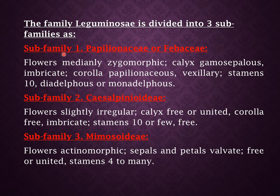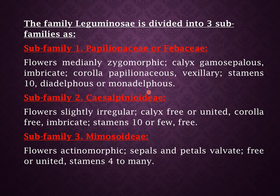Some identifying features of this family are: flowers are medianly zygomorphic; calyx is gamosepalous and imbricate, while corolla is papilionaceous and vexillary. Stamens are usually ten, diadelphous; monoadelphous stamens are rarely present.